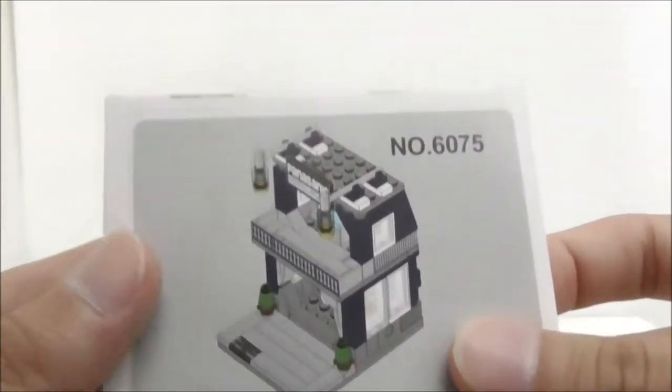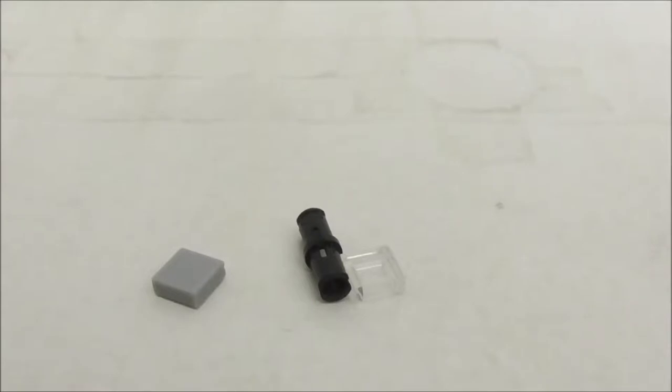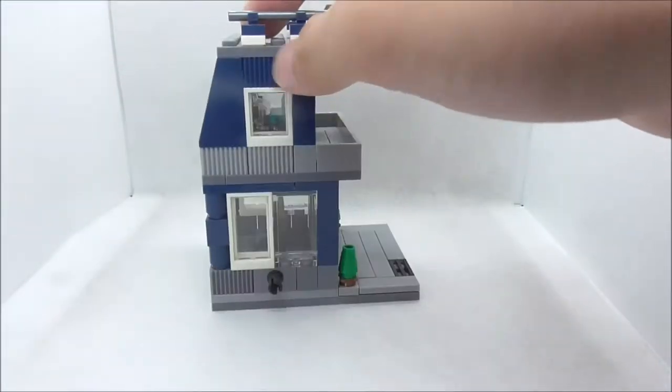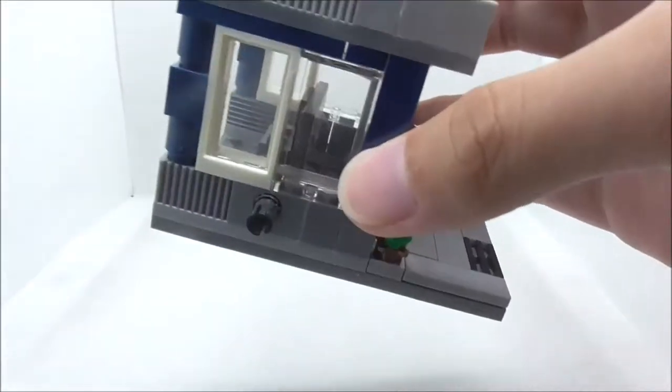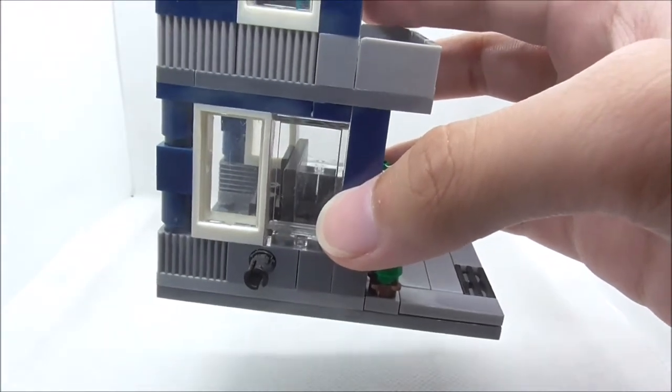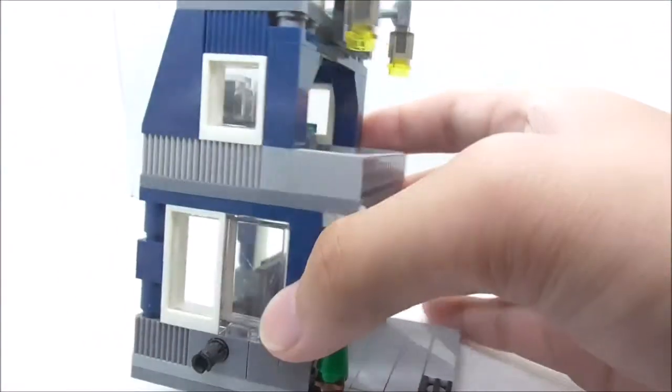For the extra pieces, there are only three of them. This is the Panasonic store itself. Let's start with the side—you have this connector piece which can be used to connect to other buildings made by Sembo Block. You have some texturing in different colors.